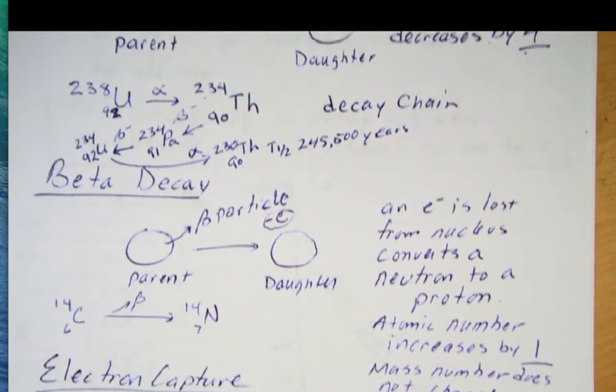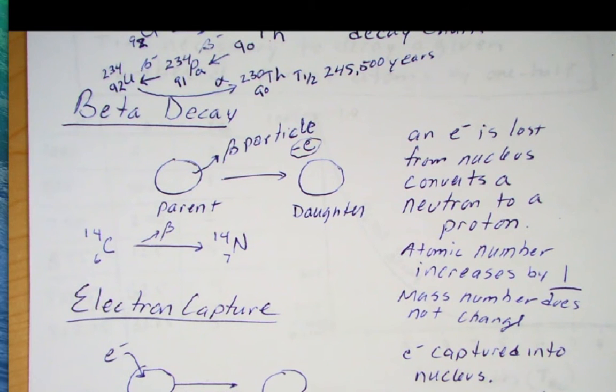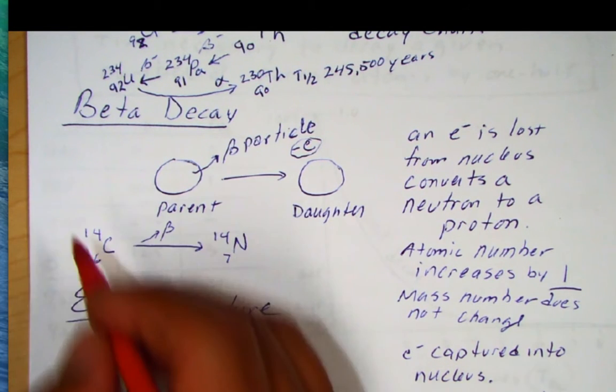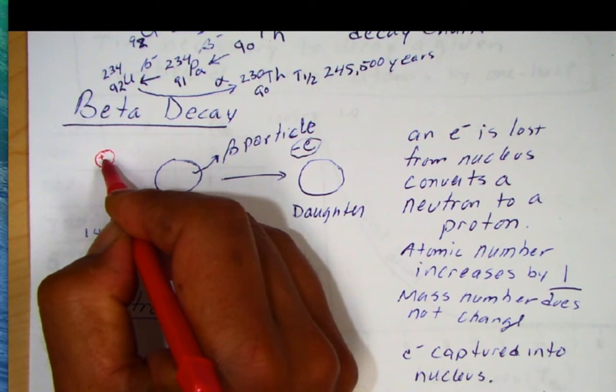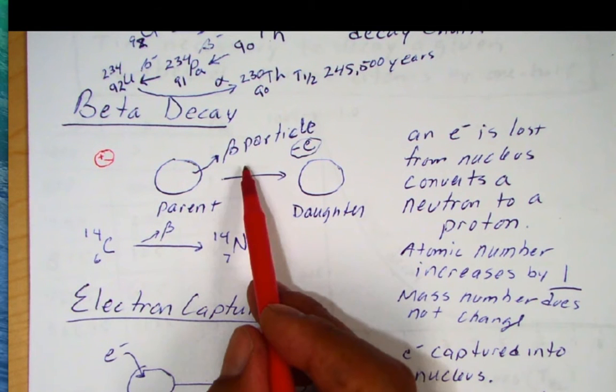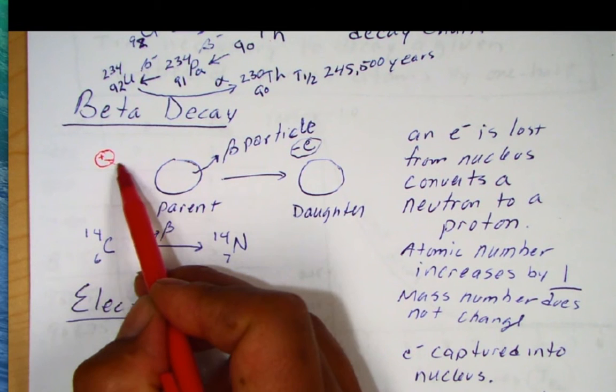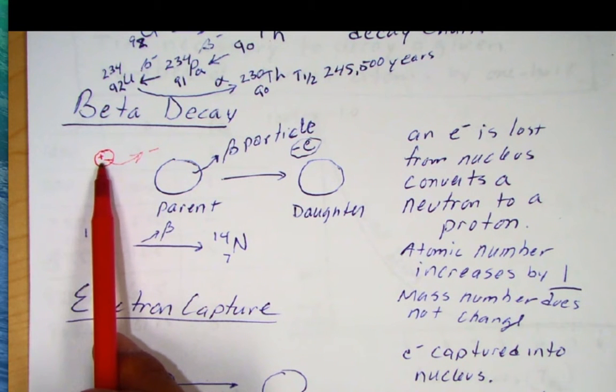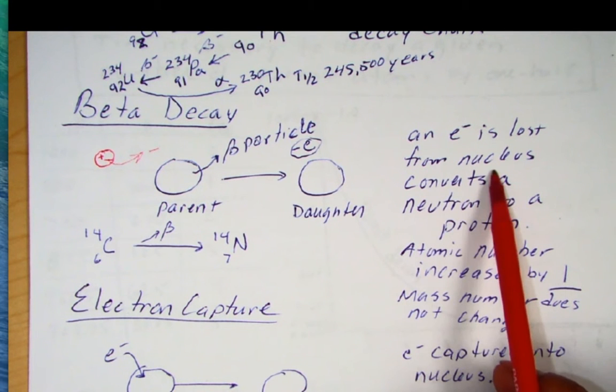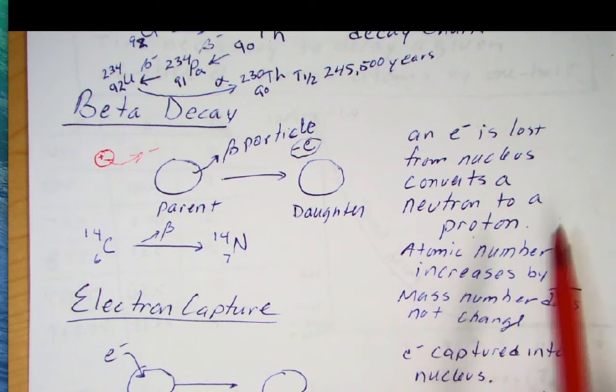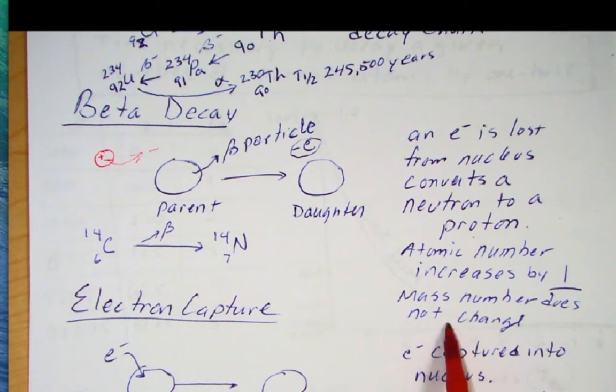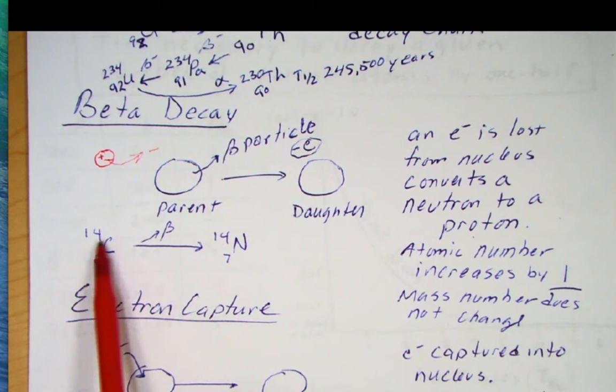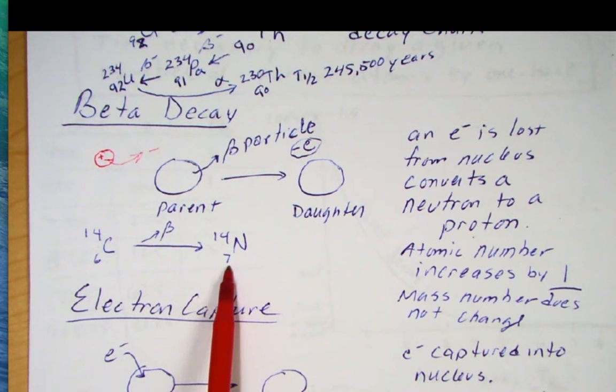Now, the second type of decay is the beta decay. And beta decay is an example of what happens in carbon-14. So what happens is, remember, neutrons in the nucleus have both positive and negative charges. So basically what happens is a beta particle is lost from the nucleus. So you lose that negative particle from the nucleus. So when you lose that negative particle, that neutron gets converted to a proton. So an electron is lost from the nucleus, converts a neutron to a proton. So the atomic number is increased by one. But the mass number does not change. For example, carbon-14 decays to nitrogen-14. All we did was take an electron out of a neutron here, which means that neutron converts to a proton, and we make it atomic number seven. So that's the beta decay, common in carbon-14 dating.